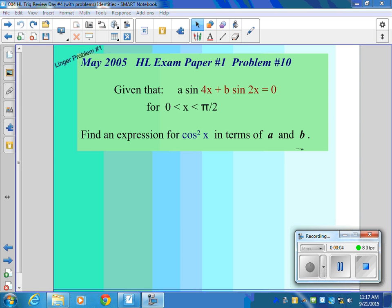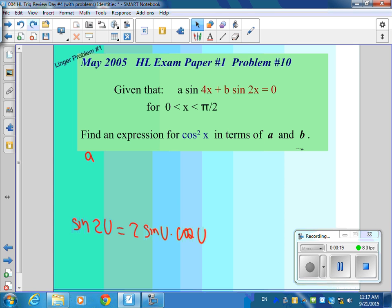This is a problem for trig identities in a very unique way. What we're doing is saying, I know, I remember what sine 2u is. Sine 2u is 2 sine u cosine u, or sine 2x is 2 sine x cosine x.